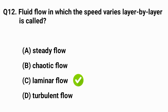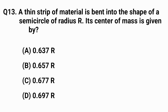Question number thirteen: a thin strip of material is bent into the shape of a semicircle of radius R. Its center of mass is given by the right answer is option A.